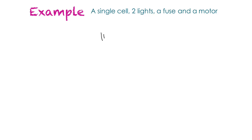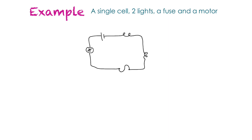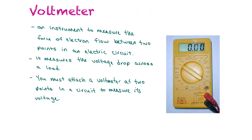Our next example: draw a single cell, two lights, a fuse, and a motor. I draw the single cell, then two lights — turning the corner for the second one — then a fuse, then the motor. There is our circuit: single cell, two lights, a fuse, and a motor. In this example there's no switch, so the circuit would run continuously.